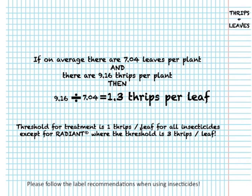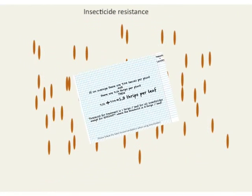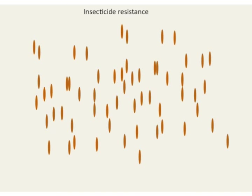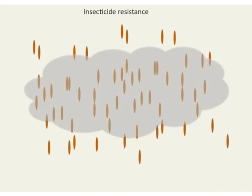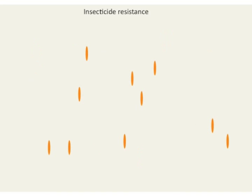When using insecticides to control onion thrips, the threshold for treatment is 1 thrips per leaf for all currently registered insecticides, except for Radiant, where the threshold is 3 thrips per leaf. When onion thrips numbers in an onion field increase above threshold, an insecticide application may be needed to control their population.